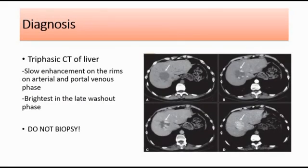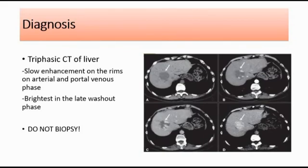For diagnosis, the gold standard to diagnose liver hemangioma would be a triphasic CT scan of the liver. In the picture labeled A, B, C, D — A is the non-contrasted CT scan, B is the arterial phase, C is the portal venous phase, and D is the late washout phase. We can see slow enhancement on the rims during the arterial and portal venous phases, whereas the hemangioma is the brightest in the late washout phase. For liver hemangioma, remember we do not do liver biopsy, because we are scared of rupture.